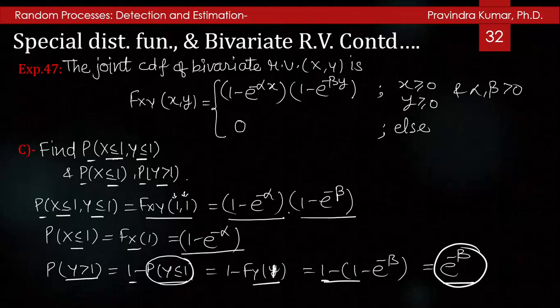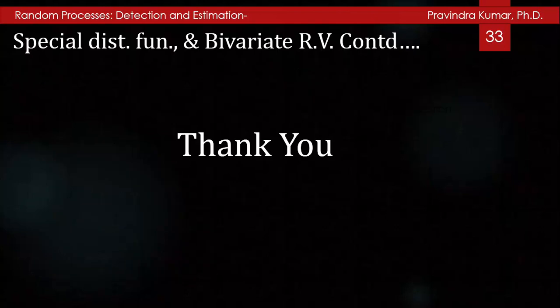In this lecture we discussed bivariate random variables, joint distribution functions, one function of two random variables, and two functions of two random variables. This was the fifth lecture of the lecture series on Random Processes Detection and Estimation. In the next lecture, we will discuss joint moment, correlation, covariance, joint moment generating function, joint characteristic function, conditional distributions, conditional expected values, conditional variance, and the concept of random process. Thanks for listening.